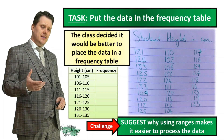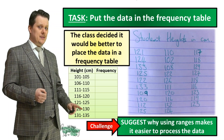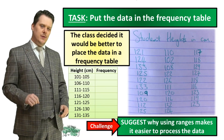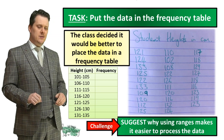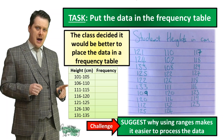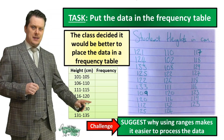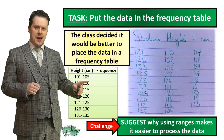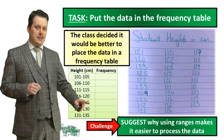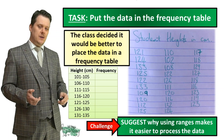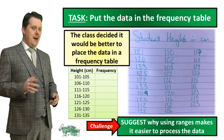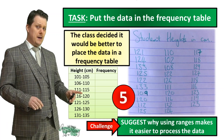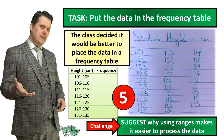Next, the class decided it would be better to put the data into a frequency table. For your next task, go through the data set, find the range that each number falls within, and put a tally in its frequency column. For example, 121 falls in the 121–125 range, so put one tally there; 124 also falls in that range, so add another tally — keep going until you've done it for all your data. As a challenge, suggest why using ranges makes it easier to process the data. Pause the video if you need more time.